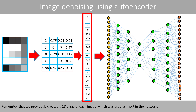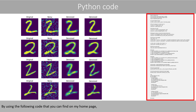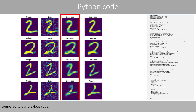Remember that we previously created a one-dimensional array of each image, which was used as input in the network. A better way is to use a convolutional neural network to compress the image, where one instead uses a filter. I will explain how a convolutional neural network works in a future video. By using the following code that you can find on my homepage, I was able to recreate the original images a lot better compared to using our previous code.